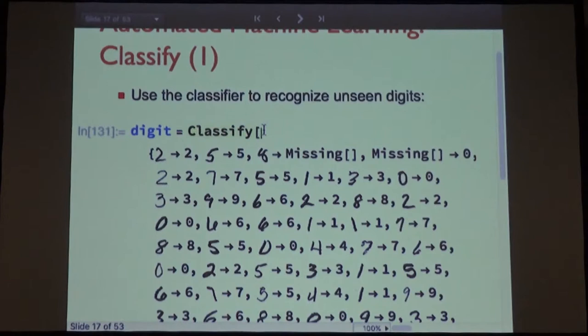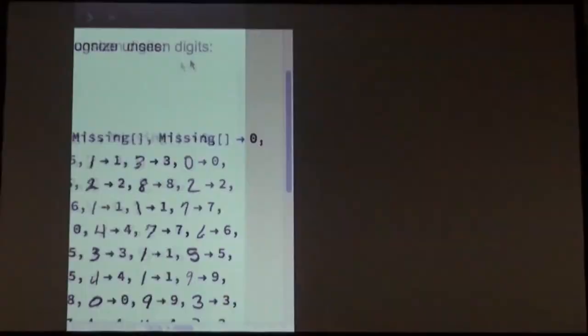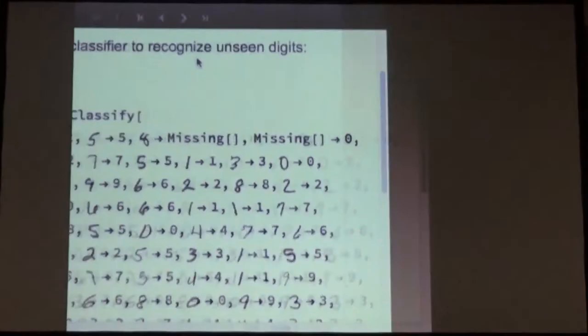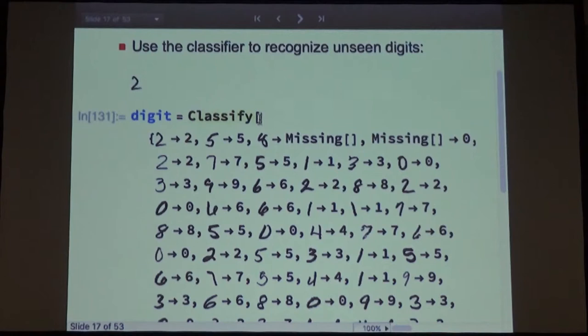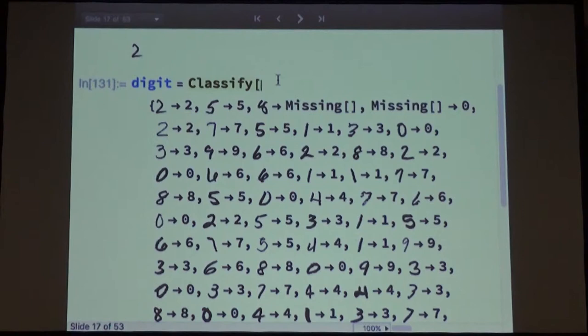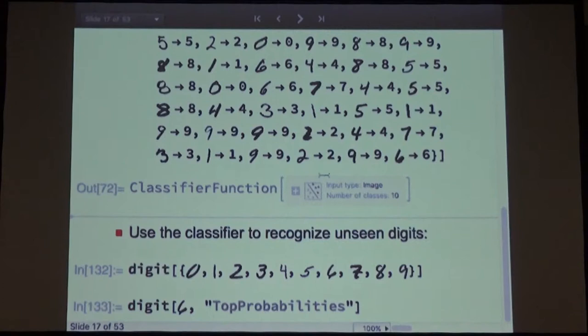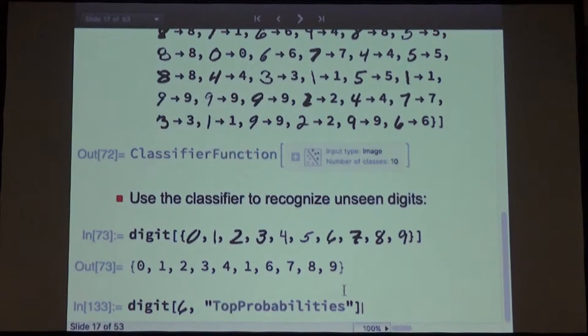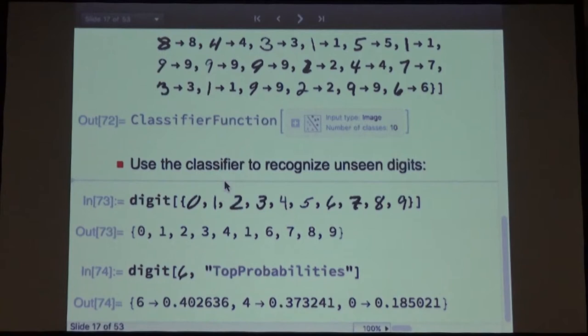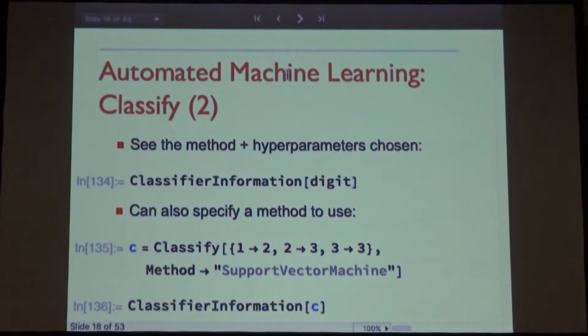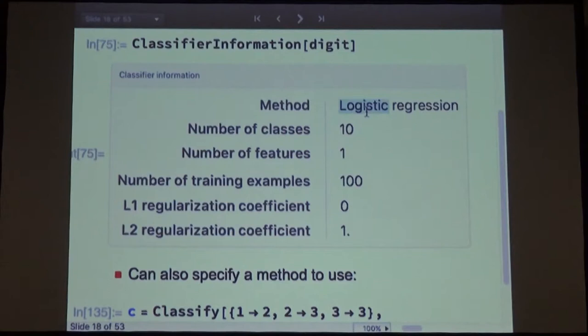For classify, you can give it all sorts of different data — a list of images, with missing values if you want. Just run it and it will decide what the best method is to use, creating a classify function that can immediately be used to classify new digits. You can get the top probabilities too. The framework is completely probabilistic — even random forests or anything else must be made probabilistic. You can get information about what it was doing — in this case it chose logistic regression with L1 and L2 regularization coefficients. You can also specify the method and sub-options, like SVM.